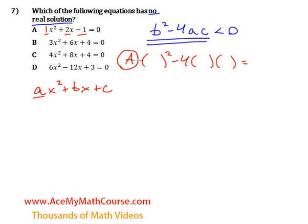Okay, so b squared, b is 2, negative 4a is 1, c is negative 1. 2 squared is 4. Negative 1 times 1, negative 1 times negative 4. We get plus 4.